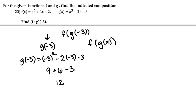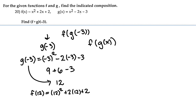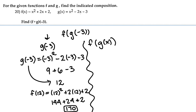So g of negative 3 equals 12, which we plug into f. So f of 12 is going to be 12 squared plus 2 times 12 plus 2. 12 squared is 144, this is 24, and this is 2, which gives us 170. So our answer is 170.